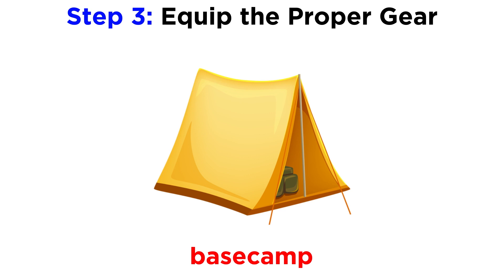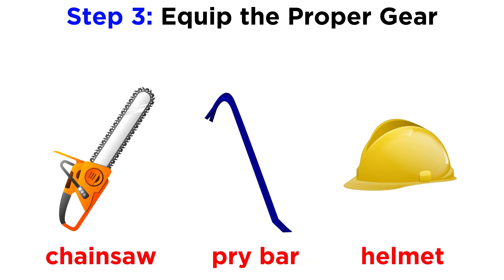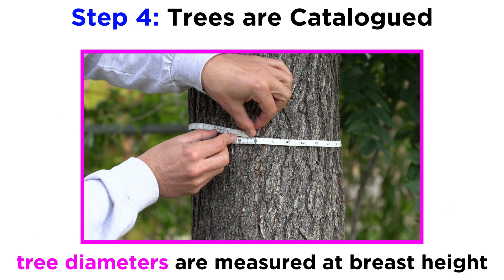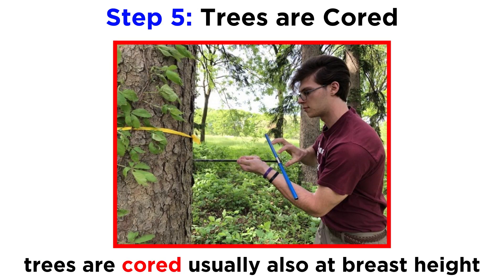Depending on the study, a dendrochronologist may choose to leave some materials at a nearby base camp or bring additional items like chainsaws, pry bars, and helmets. After arriving at the site, setting up the plot, and determining which trees are to be cored, these trees are cataloged and their diameters are measured at breast height — 1.3 meters off the ground in most countries. Trees are then cored, usually at breast height, but sometimes also at their base if establishment dates are needed, since the earliest years of growth will be missed at breast height.